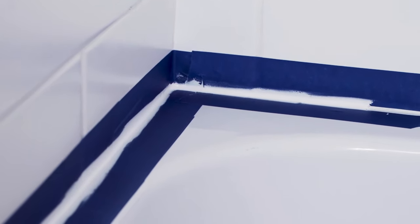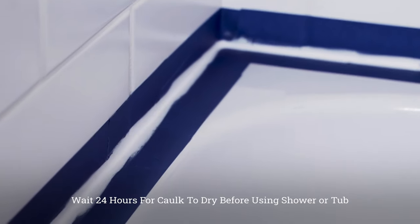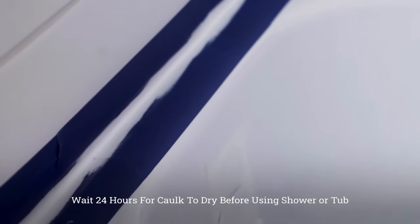Okay. Once the caulking is done and you're satisfied that you get it nice and smooth, now it's time to remove the tape. You want to be very careful with this, and you want to do this while the caulking is still wet.